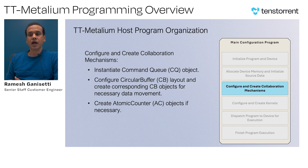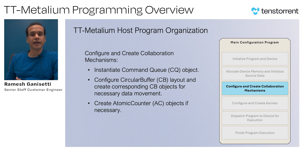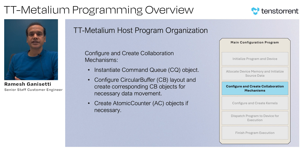The next thing is to configure and create collaborative mechanisms. We already talked about the command queue object, which primarily takes care of communication between the host and the device. The host code also has to take care of the circular buffer config — it has to define those circular buffer configs and the corresponding CB objects for the data movement. The host program also has to create atomic counters if required.